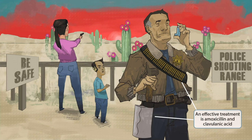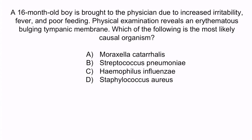Now that we've covered the image, let's review with a question. A 16-month-old boy is brought to the physician due to increased irritability, fever, and poor feeding. Physical examination reveals an erythematous bulging tympanic membrane. Which of the following is the most likely causal organism? A) Moraxella catarrhalis, B) Streptococcus pneumoniae, C) Haemophilus influenzae, or D) Staphylococcus aureus. From the question stem, this boy has signs and symptoms consistent with acute otitis media. The erythematous bulging tympanic membrane is the key to making this diagnosis.